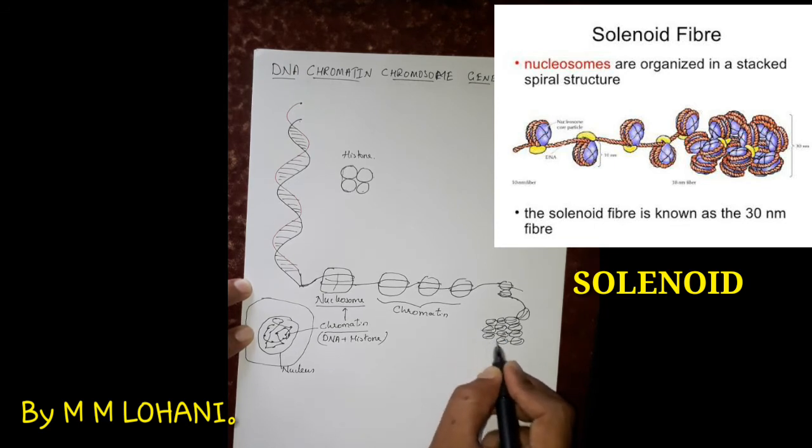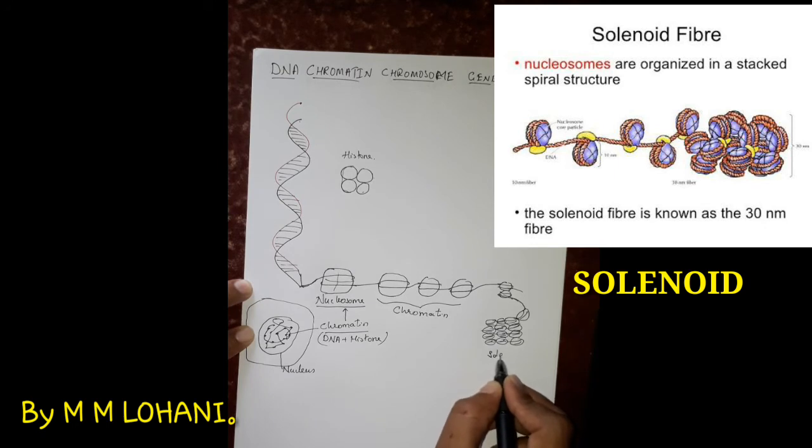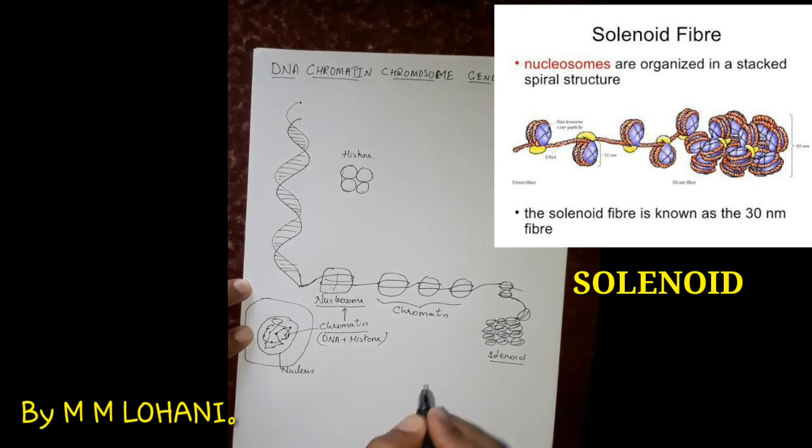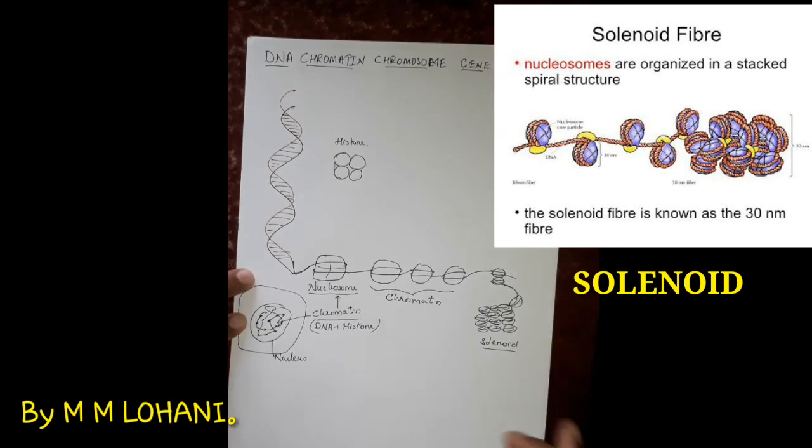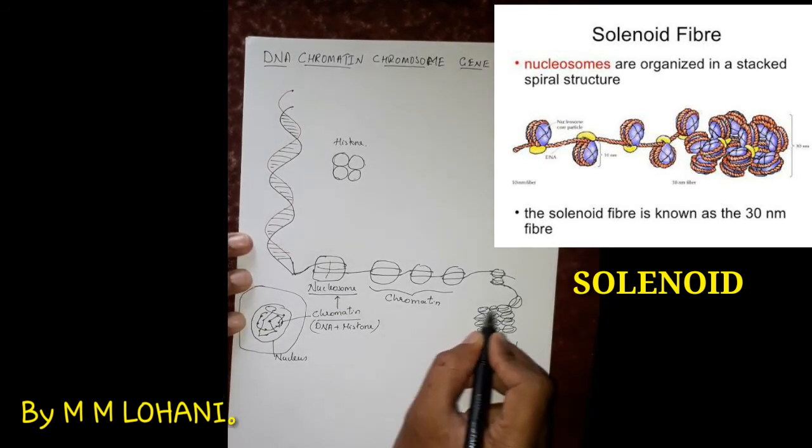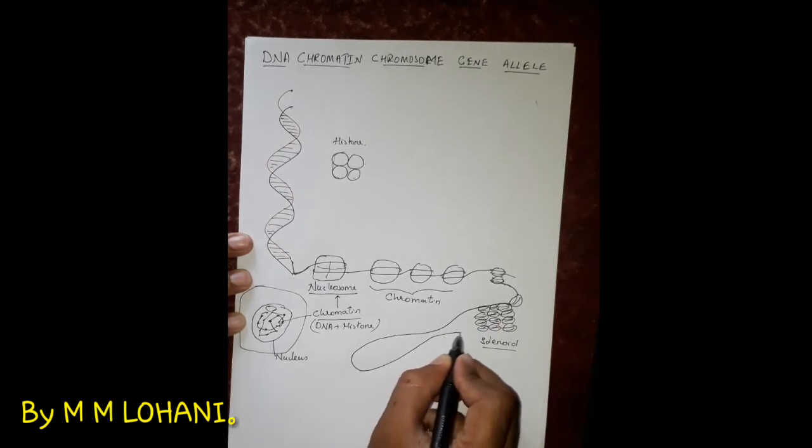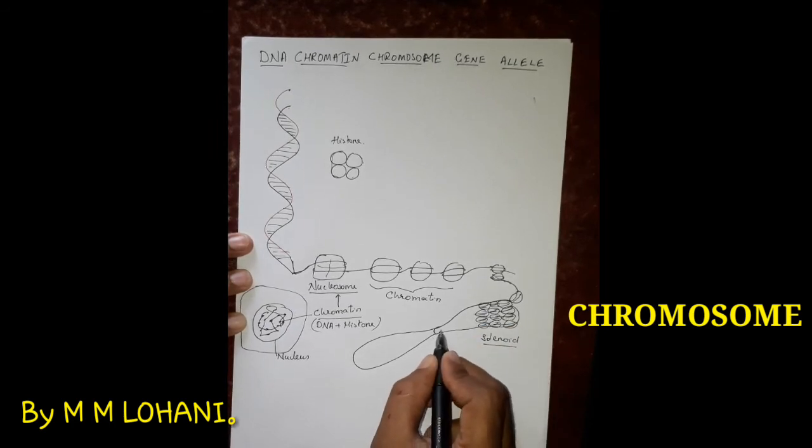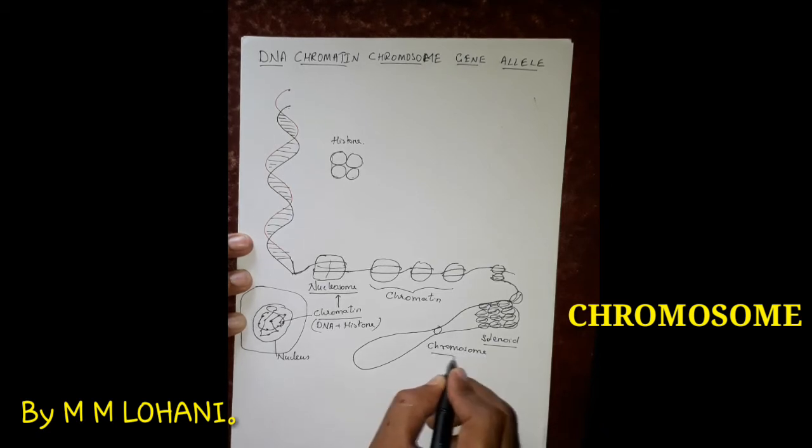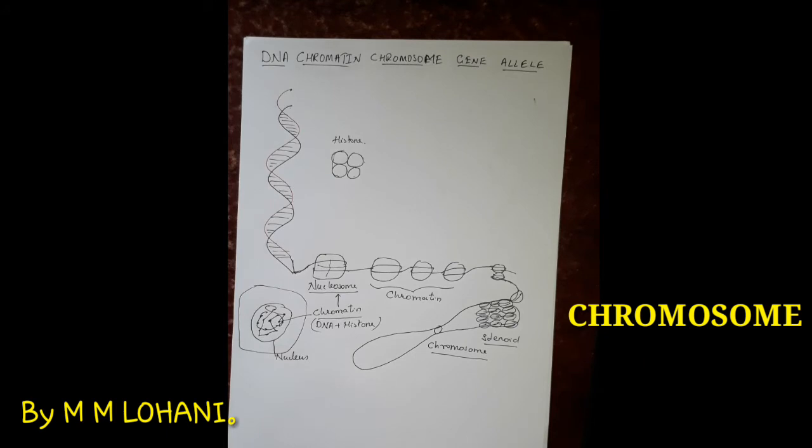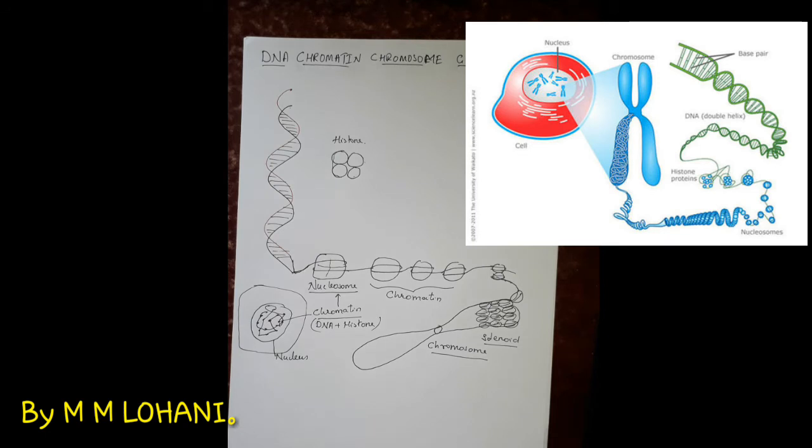Solenoid will again form into super solenoid model and this will continue and they are ultimately formed into the structure what we call as a chromosome. These chromosomes now are very easy to be transferred from a mother cell to the daughter cells. This particular shape of the chromosome is visible in the metaphase stage of the mitosis, so it is called as metaphase chromosome.